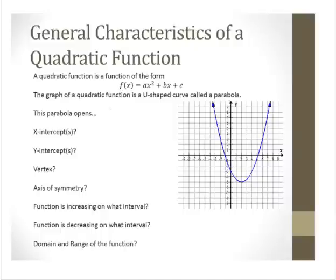First, some general characteristics of a quadratic function. A quadratic function is a function of the form f(x) = ax² + bx + c, and the graph of a quadratic function is a u-shaped curve called a parabola.